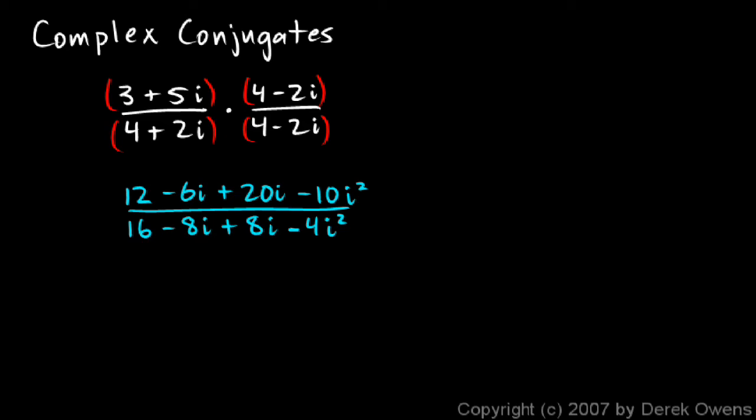And we'll simplify this now. Let's look at the numerator. I have 12, and then I'll combine terms here. My minus 6i and plus 20i combine to give me a plus 14i. And then this is minus 10 times i squared, and the i squared, remember, is negative 1.